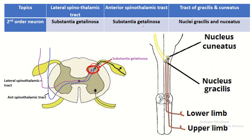In the lower part of the medulla oblongata, two nuclei are present. A nucleus means a collection of nerve cell bodies. This is nucleus gracilis and this is nucleus cuneatus. The central process of the pseudo-unipolar neuron synapses with nucleus gracilis and nucleus cuneatus. So for the tract of gracilis and cuneatus, the second order neuron is nucleus gracilis and cuneatus.